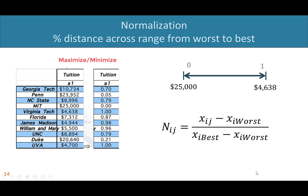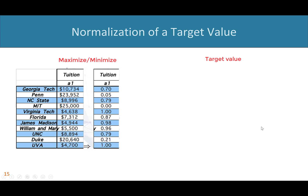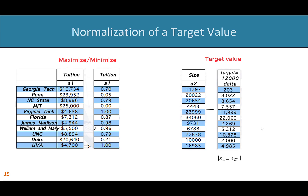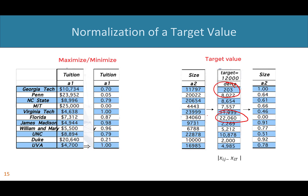If you happen to be normalizing something that has a target value — remember we had a target of 12,000 students — all you need to do is take the raw data, find the distance from that target value first, then normalize. In that case, the smallest distance is the best. Georgia Tech is almost exactly at our target, with only 203 students difference, whereas Florida is 22,000 away. So 203 is the best and gets a one, and 22,060 is the worst and gets a zero on the normalized scale.